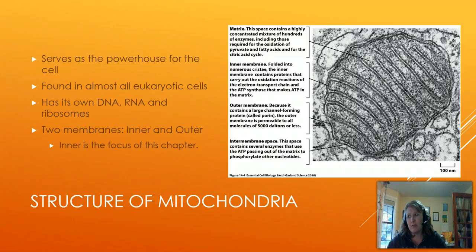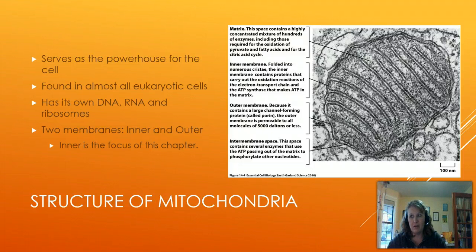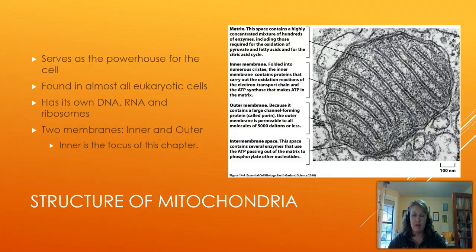Now let's talk about the structure of the mitochondria. It is a fairly circular organelle and it has two membranes — the outer membrane and the inner membrane. The outer membrane is just a standard membrane of the organelle, but the inner membrane gives us the ability to do chemiosmosis. It forms an inner membrane space between the two membranes, and these invaginations create a lot more surface area, allowing for many more sites for the electron transport chain and chemiosmosis to occur and produce ATP. The inner membrane space is where we pump those protons into.